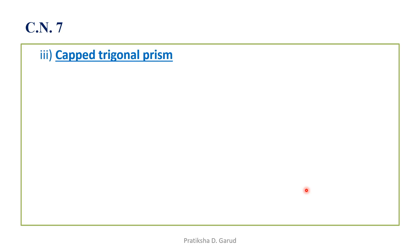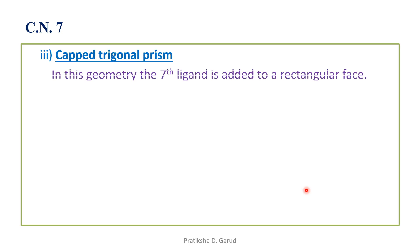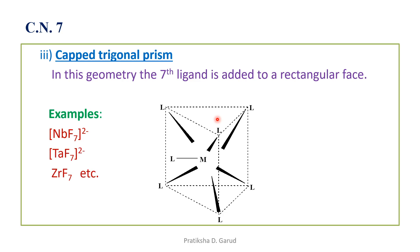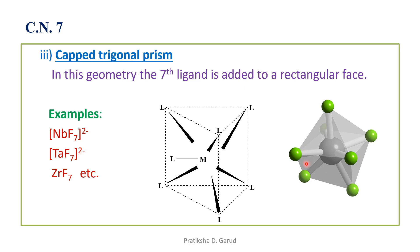The third geometry for coordination number seven is the capped trigonal prism. In this geometry the seventh ligand is added to a rectangular face of the trigonal prism. Its examples are [NbF7]²⁻, [TaF7]²⁻, and ZrF7. One more ligand is added at the rectangular face, so it is called the capped trigonal prism.